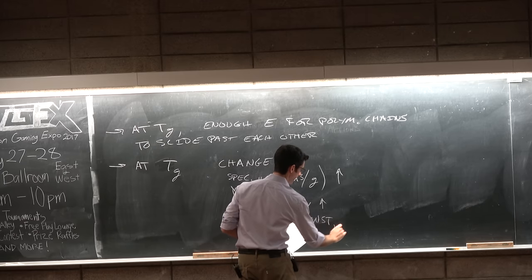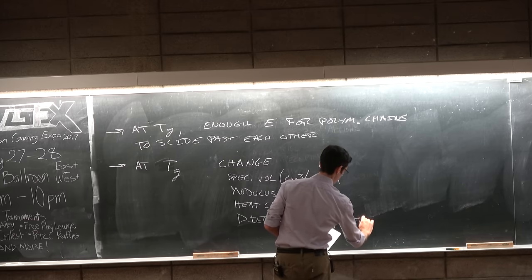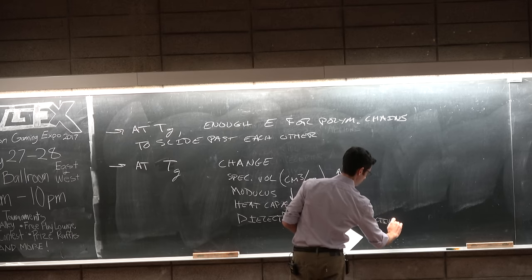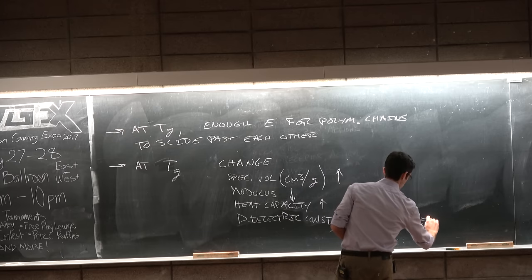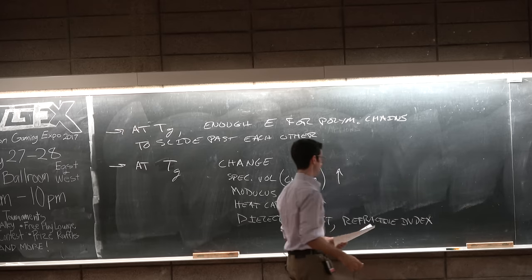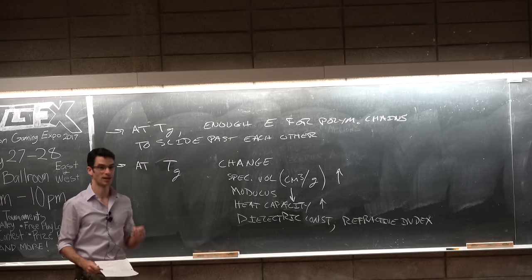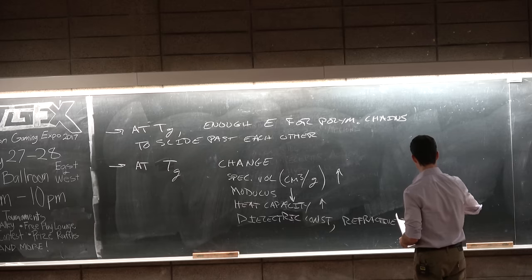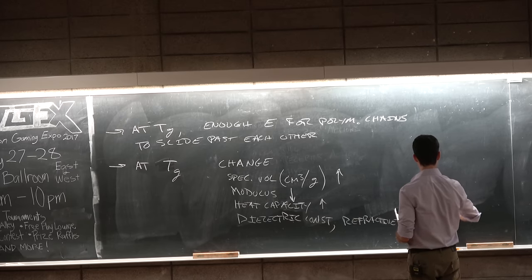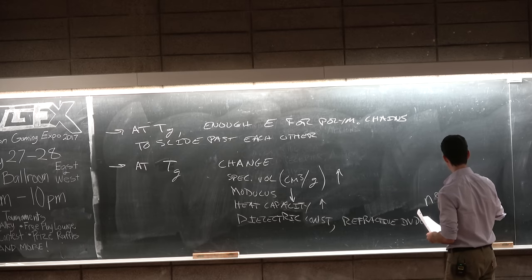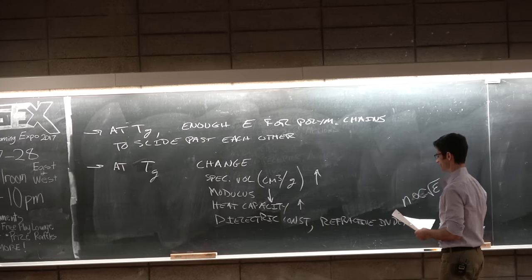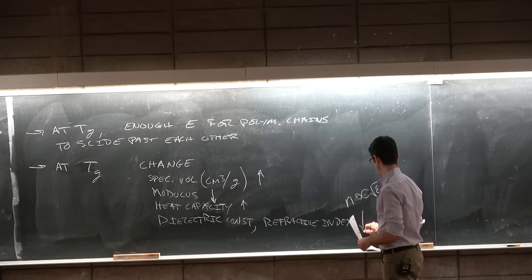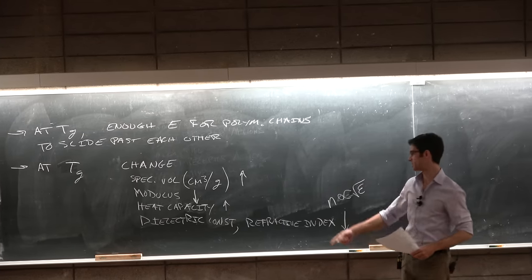How about the modulus? Modulus is just like the spring constant of a solid. From Hooke's law, what happens to the modulus? The modulus goes down. The heat capacity of the rubbery regime is greater than the heat capacity of the glassy state, and also the dielectric constant changes.